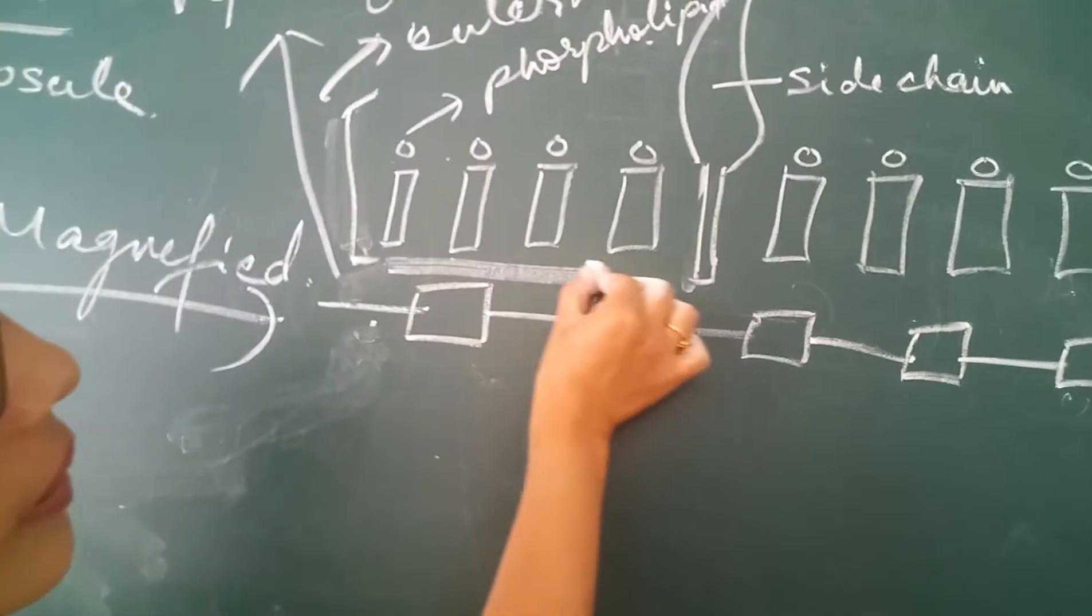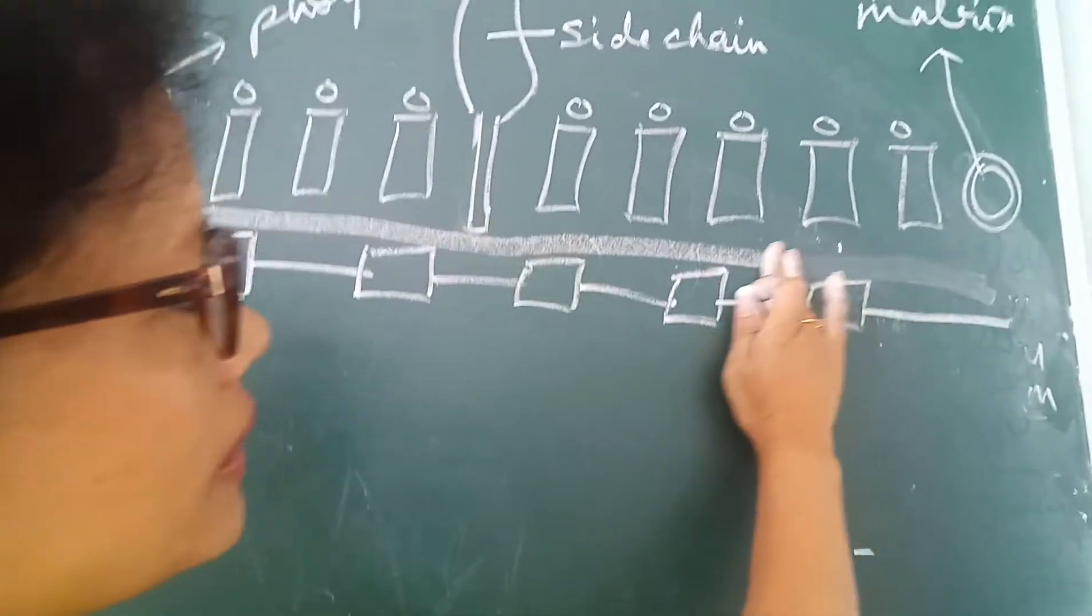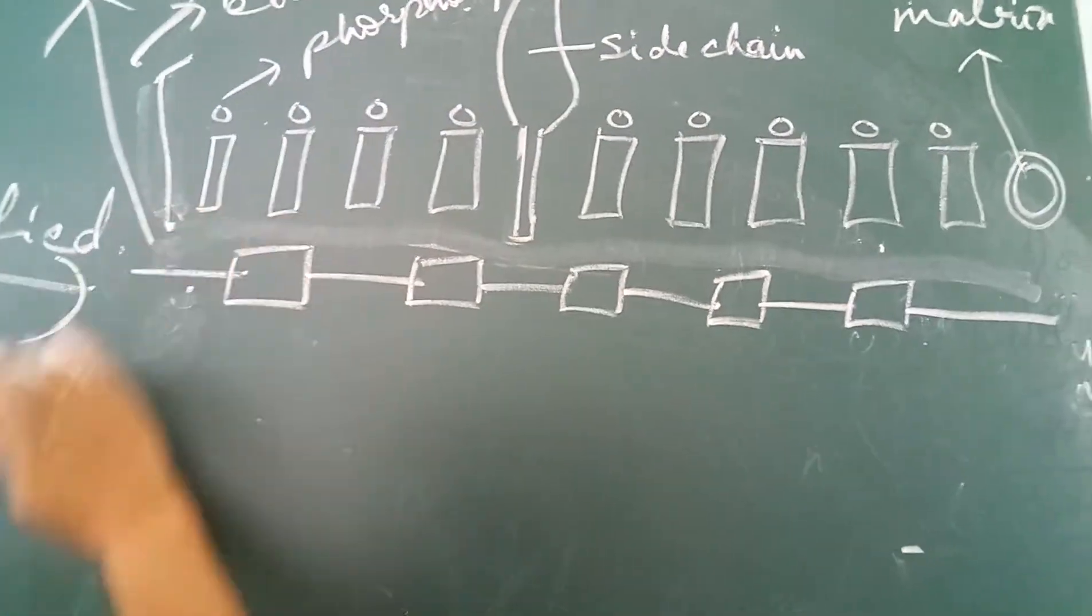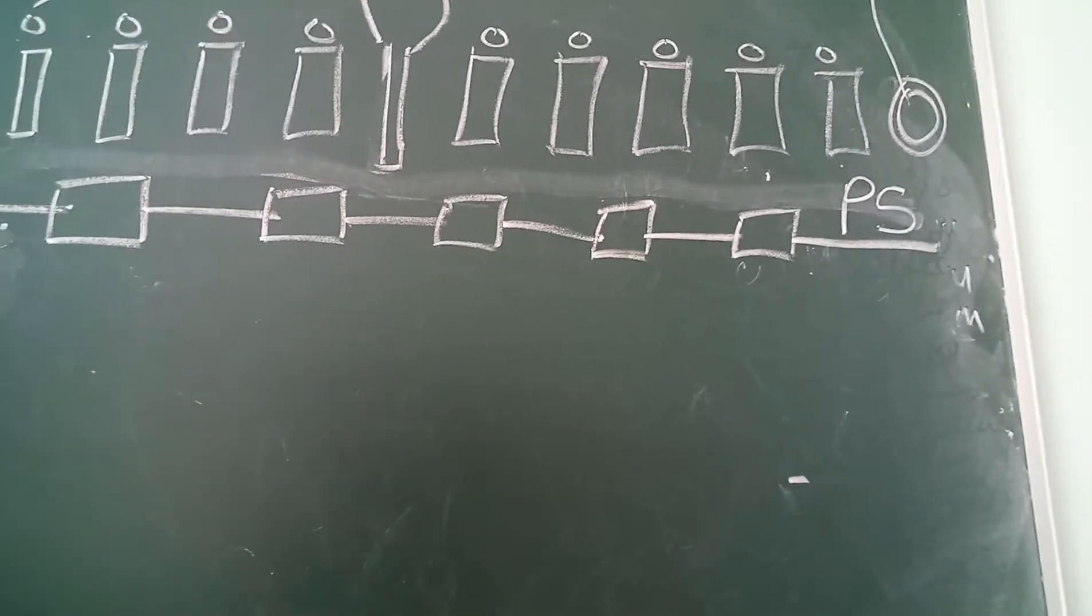And look here, this space here in the middle, there is a space here in the middle. What do you call that space? That is called your periplasmic space.